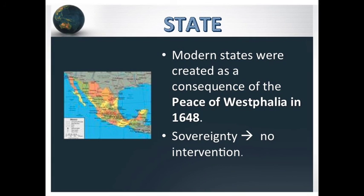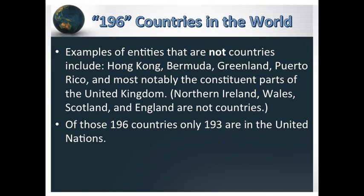The definition and concept of state starts after the Peace of Westphalia in 1648, where the concept of the modern state — the state that we know right now — is conceived. This introduced the concept of sovereignty, meaning no intervention: no other country can get inside your country and tell you what to do. We have, right now, 196 countries in the world.